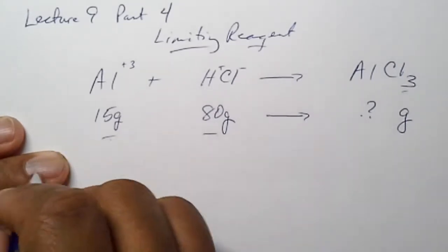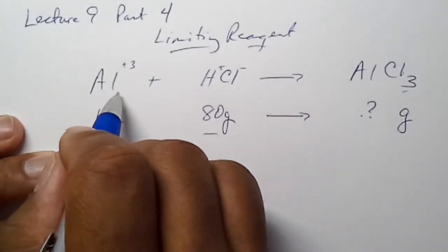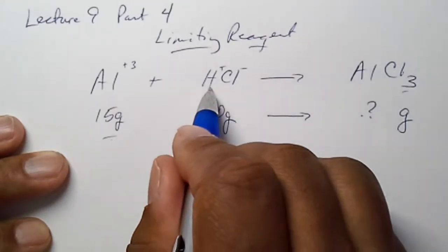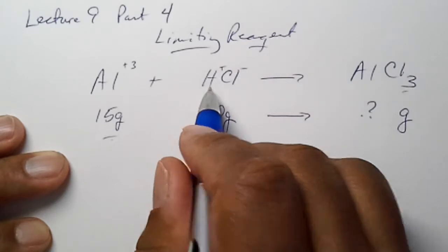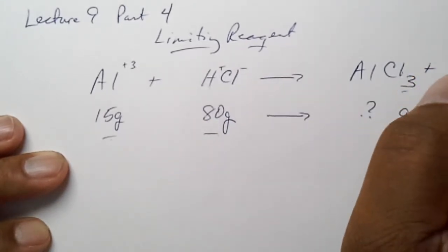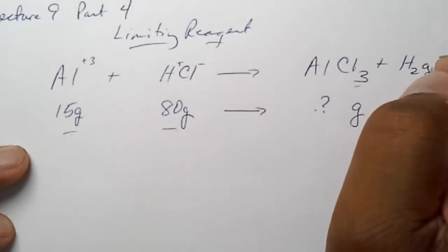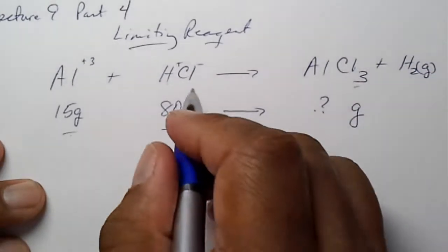So, first thing, balance equation. Is this balanced? Let's see, we got one aluminum, one hydrogen. Am I missing it? I'm missing the hydrogen gas. It's part of this reaction.